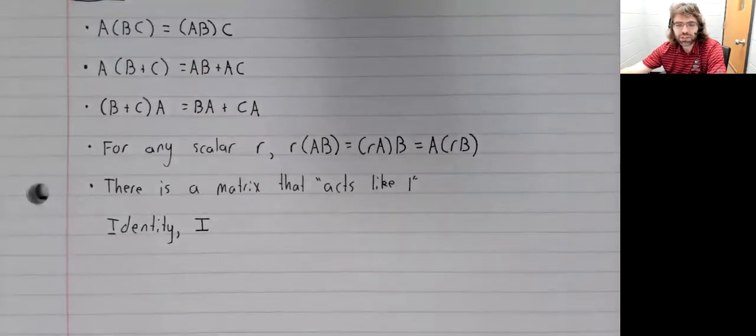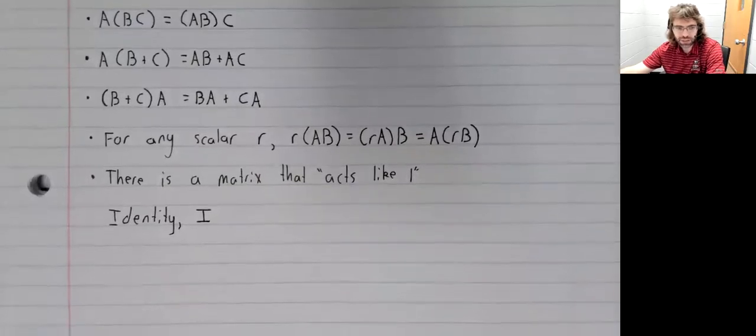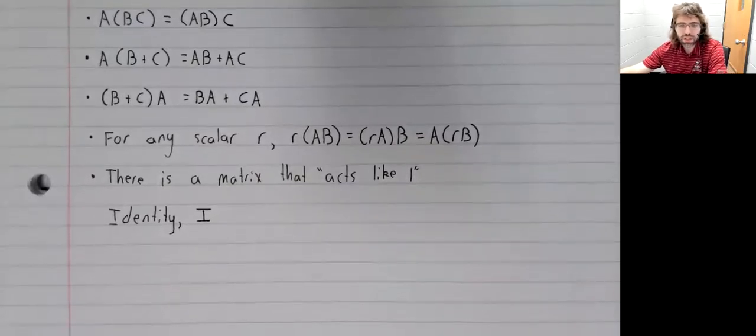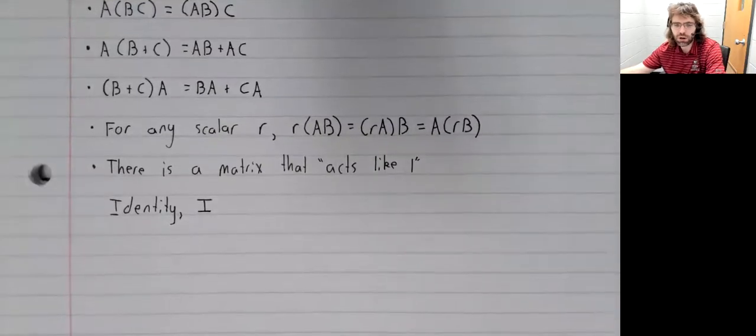This matrix is called the identity matrix and the identity matrix is written as I, but that's a little deceptive because there are infinitely many identity matrices. There's a two by two square identity matrix, there's a three by three identity matrix, there's a four by four identity matrix, and so on.